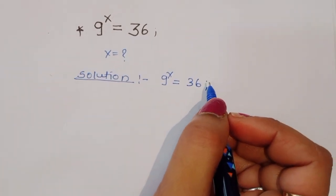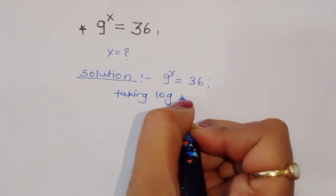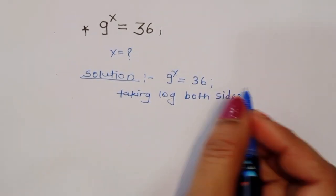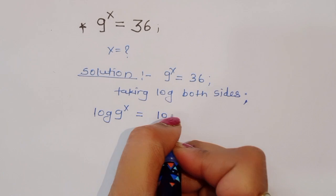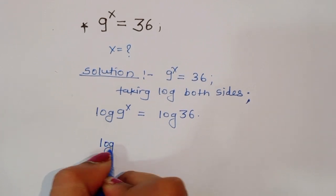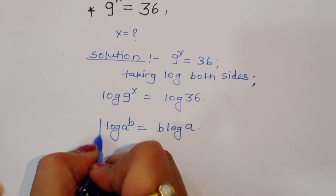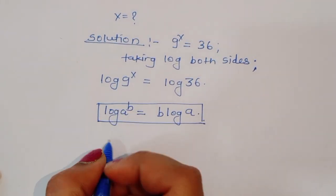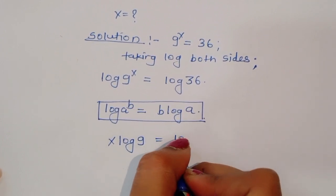Now we can do one thing here: taking log both sides. So taking log both sides, we will get log of 9 power x is equal to log of 36. Now we know the formula: log of a power b is equal to b log of a. Using this formula, we can write x log of 9 is equal to log of 36.